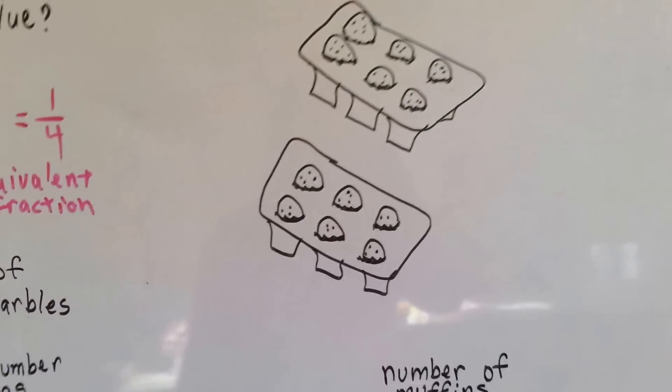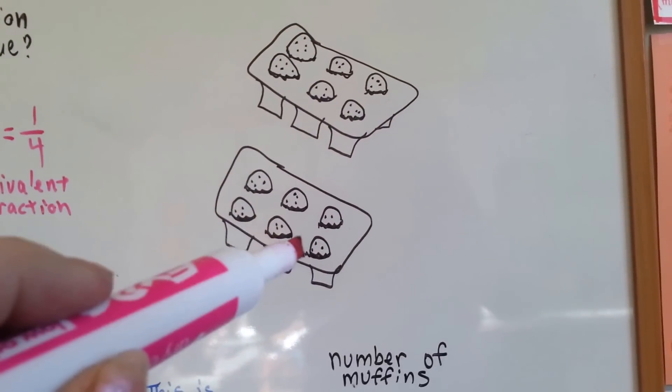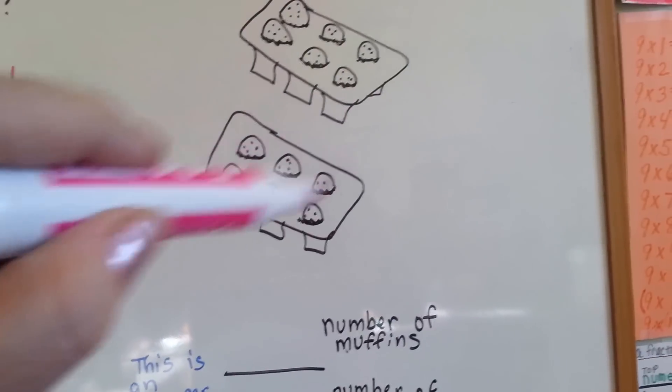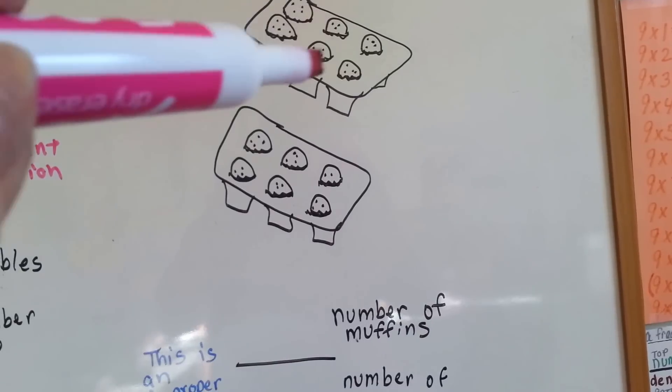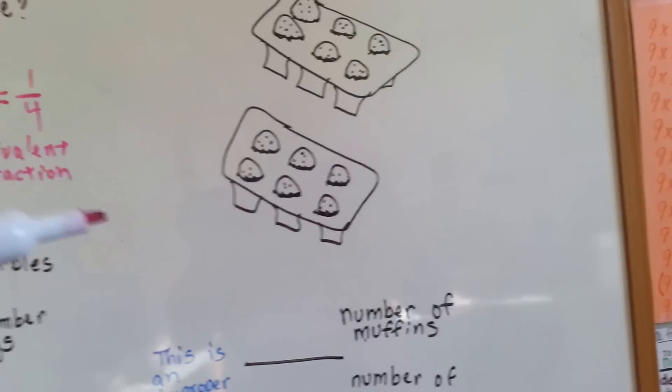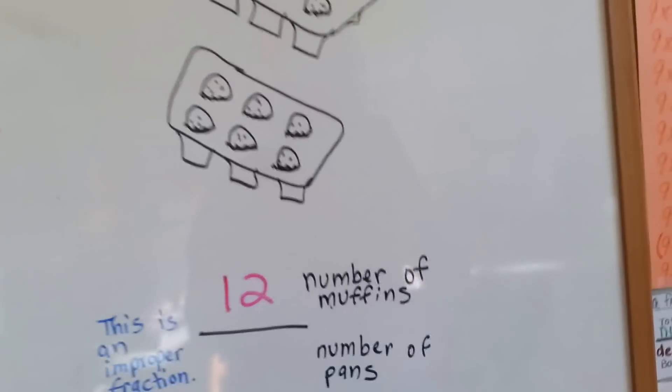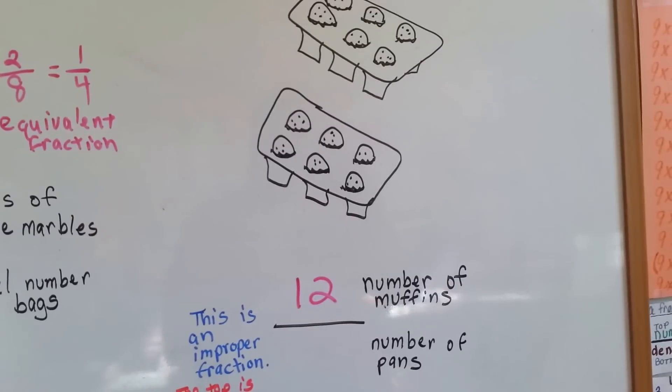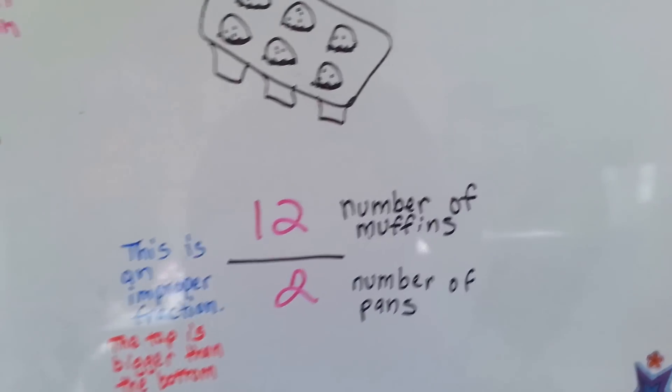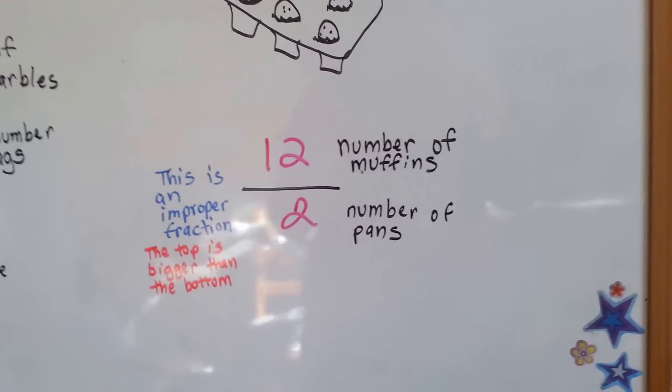All right, let's take a look. We've got muffin pans and there's six muffins here and six muffins here. What is the total number of muffins? One, two, three, four, five, six, seven, eight, nine, ten, eleven, twelve. Well, two times six is twelve, so that makes sense. So we got twelve muffins, but how many pans? There's only one, two pans.